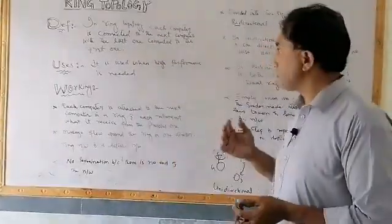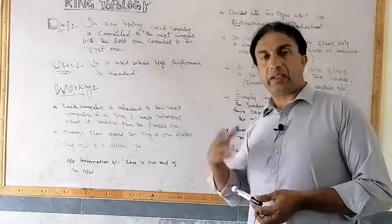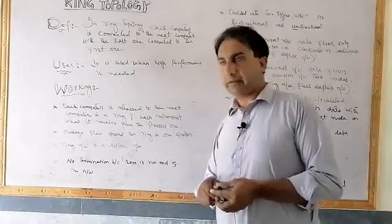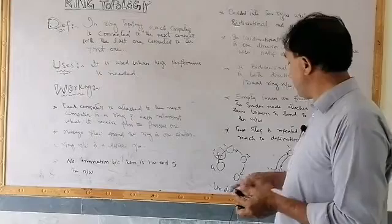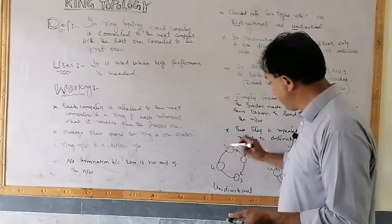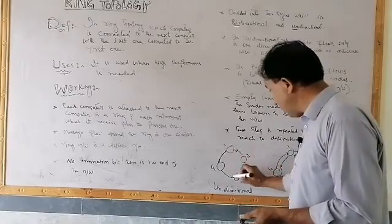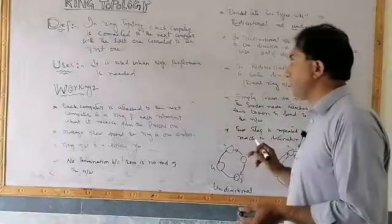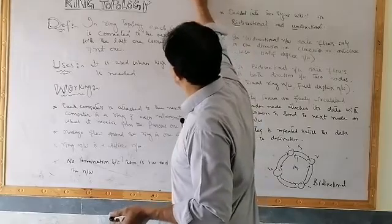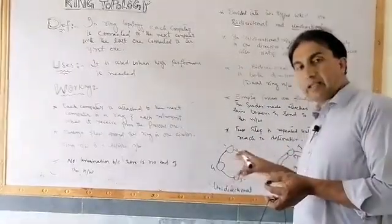In this topology, every computer is attached to the next computer. The first computer is connected to the second, second to the third, third to the fourth, and the first computer is connected to the last computer as well. For example, in this network we have four nodes — node one, node two, node three, node four — connected in a ring. This is why it is called a ring network. Ring topology and ring network mean the same thing.